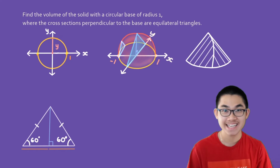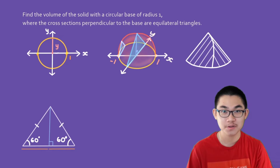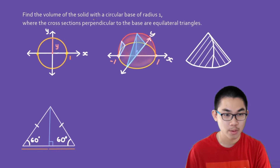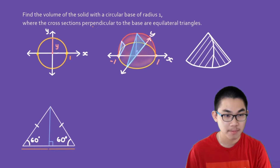Hi friends, welcome back. In this video, we're going to do two practice problems to find the volume of shapes. So let's take a look at the first problem: find the volume of the solid with a circular base of radius 1, where the cross sections perpendicular to the base are equilateral triangles.